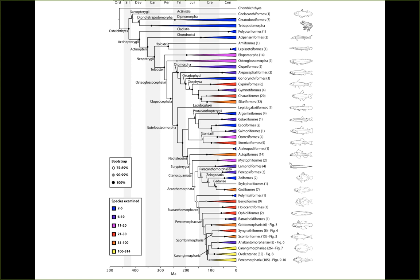Hello, and welcome to the second installment of Flipped Classroom for Ichthyology. This week we're going over what I'm calling Salmonids et al. We'll be covering the Salmonidae family, then Clupeids, Hiodontidae, Osmeridae, Esocidae, Umbridae, and Gadidae. This video will be done in two parts so I can upload it to YouTube. The first part will be on Salmonids, and the second part will be on all the other fishes.